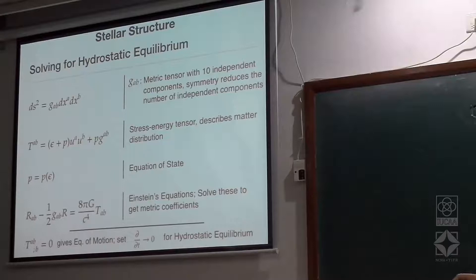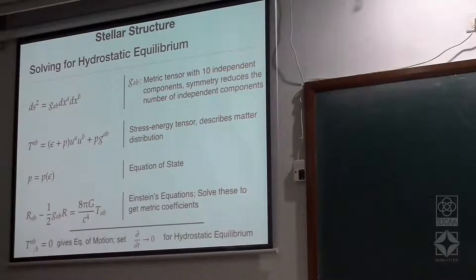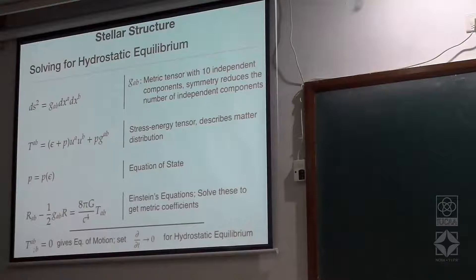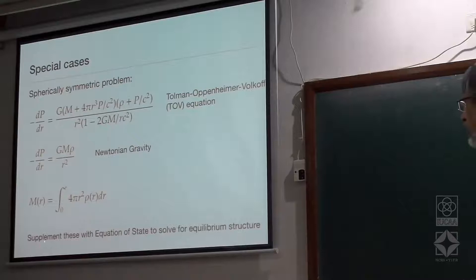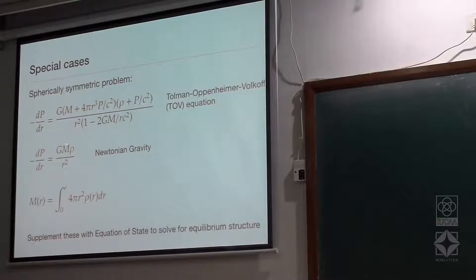The details of the properties of matter are encoded in the equation of state. Under different circumstances this solution will give you different metric coefficients — for example, if there is rotation, or if there is a magnetic field, you get deformation and corresponding metric coefficients. The most common approximation in which this equation is solved is zero rotation and spherical symmetry, putting the time derivative equal to zero.